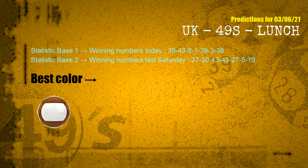According to the statistics above, with winning numbers today — 35, 43, 06, 01, 39, 03, 38 — and winning numbers last Saturday — 37, 30, 13, 43, 27, 05, 19 — the most frequently following color is brown.